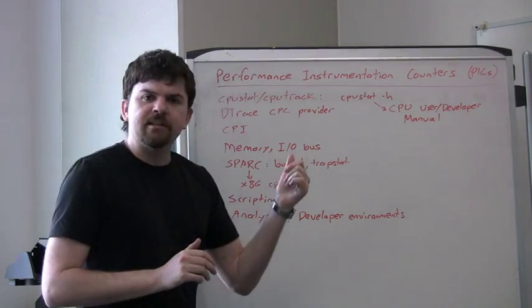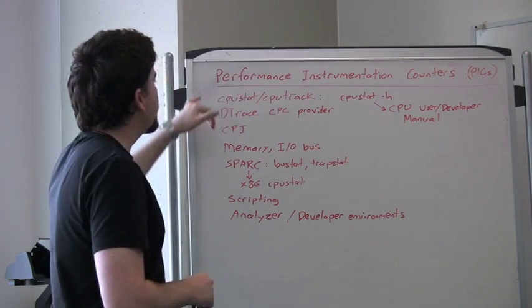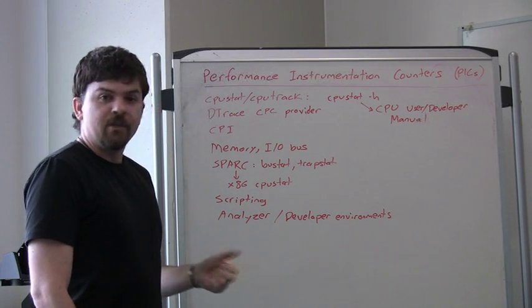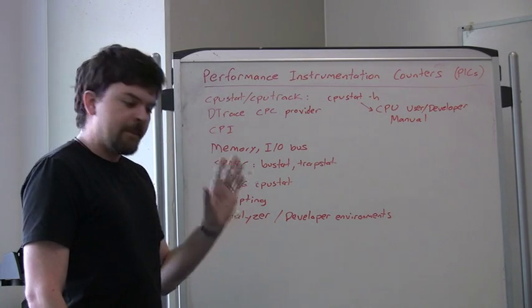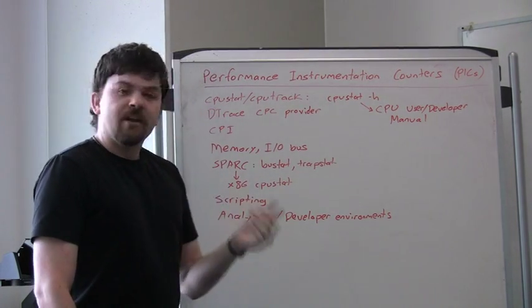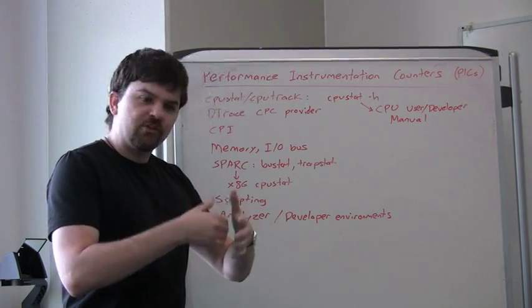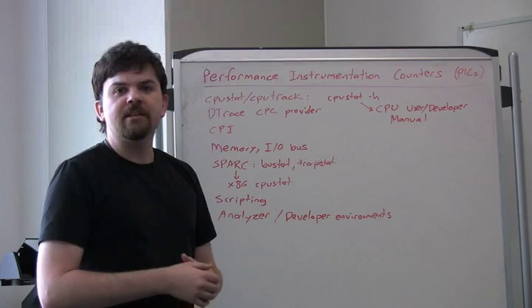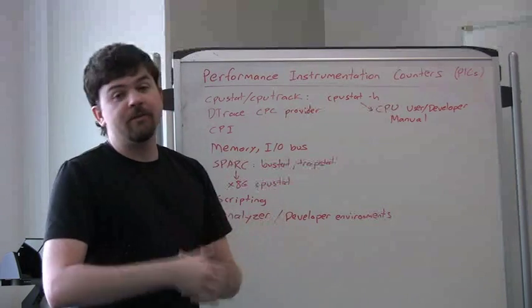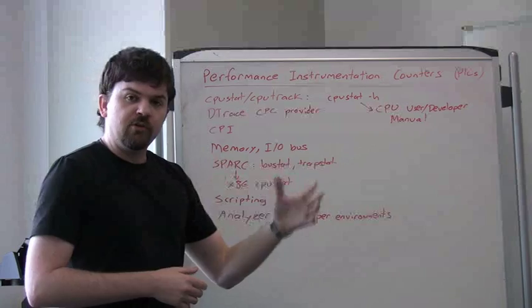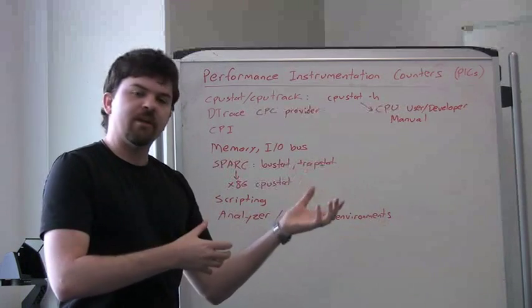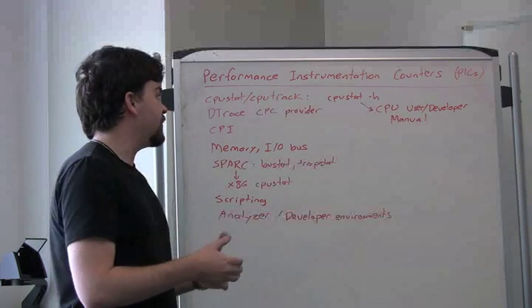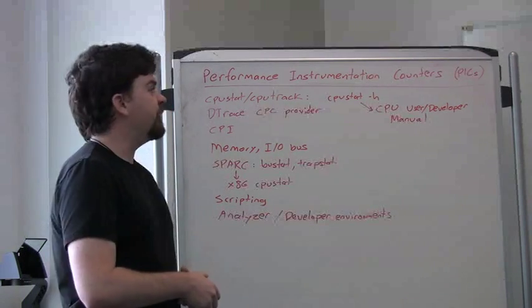On Solaris there are a couple of tools which we use to measure performance instrumentation counters. To start with, they're a bit weird. You can only measure a certain number of performance instrumentation counters at the same time, even though there may be hundreds of different statistics available - they call them events. And also when one user is programming those registers to monitor various statistics, other users can't do it at the same time. You need to be root usually, or have the right privilege, to look at the performance instrumentation counters.